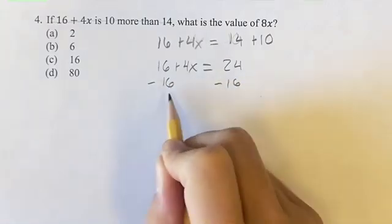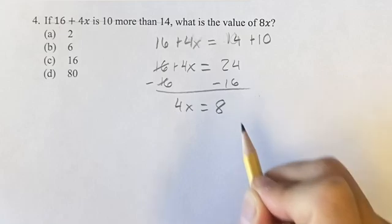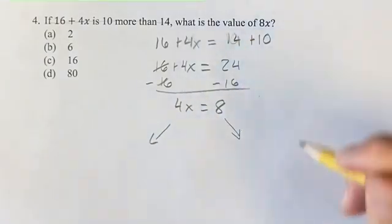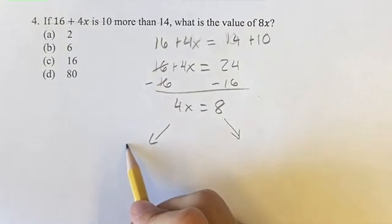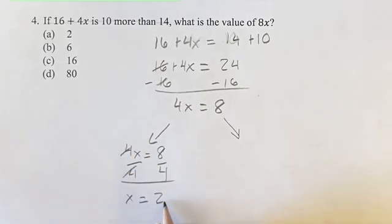If we subtract 16 on both sides, we get 4x is equal to 24 minus 16 is 8. Now there are two ways you can go from here. You can solve for x. So 4x equals 8 right here. If we divide by 4 on both sides, we get x is equal to 2.